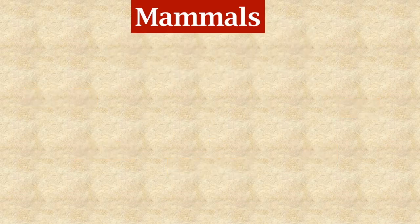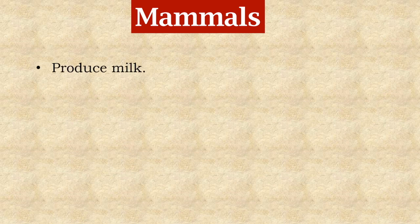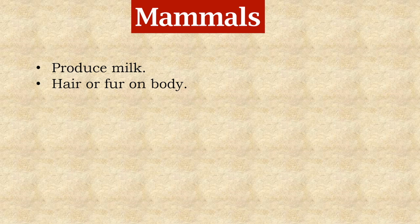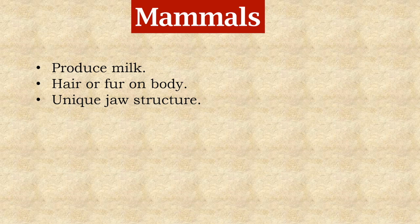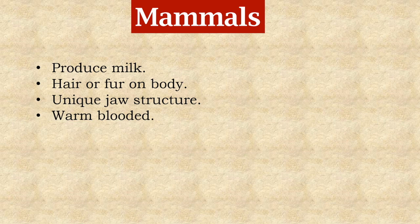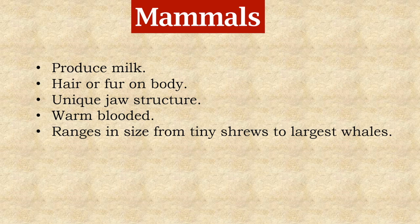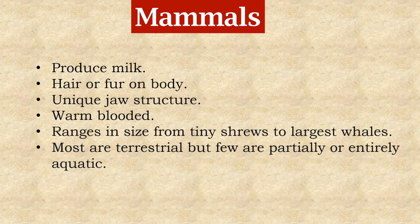Let's learn about mammals. The main characteristics of mammals are as follows: unlike other vertebrates, mammals produce milk to feed their young ones. All have hair or fur on their body. They have a unique jaw structure — their lower jaw is hinged directly to the skull instead of through a separate bone as in all other vertebrates. All mammals are warm-blooded animals, ranging in size from tiny shrews or bats to the largest known whales.